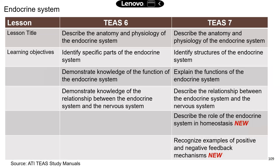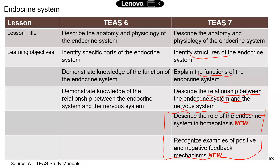It takes time for hormones to be transported to all the target organs and tissues and elicit some responses, but the endocrine system is absolutely very important. Let's look at a comparison between TIS-6 and TIS-7 in terms of learning objectives. Most of them are pretty much the same — you need to know the structures, the functions of this particular system, and also the relationship between the two controlling systems and how they work together to regulate body functions. The first new objective is to describe the role of the endocrine system in homeostasis, which has been more or less covered in TIS-6 because that's one of the major functions of the endocrine system. I will go over that in today's video.